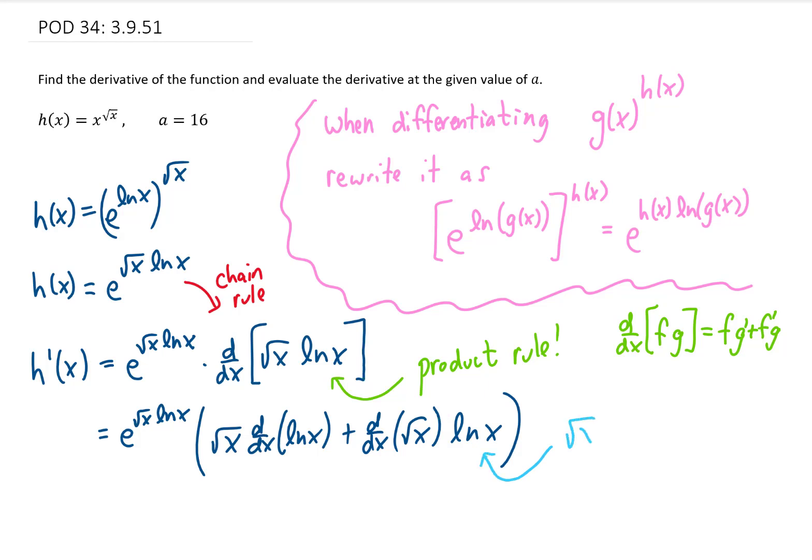Now I think we should be okay finding all these derivatives, but we do have to remember that the square root of x can be rewritten as x to the 1 half power. Now the derivative of natural log of x is 1 over x. The derivative of the square root of x we have to think of as x to the 1 half power. Then that derivative is 1 half x to the negative 1 half times the natural log of x.